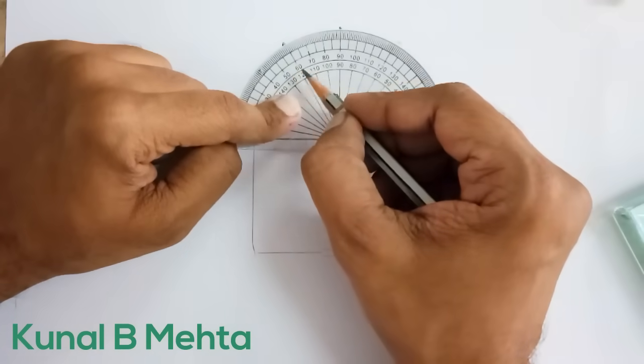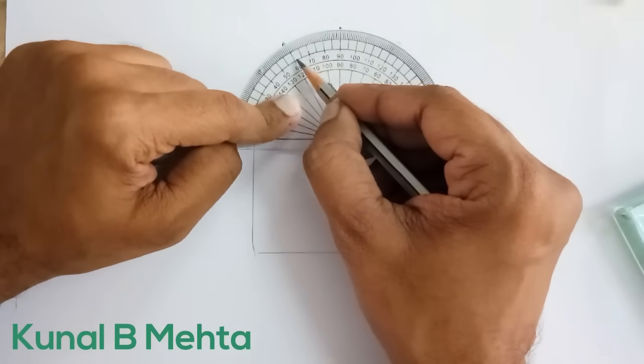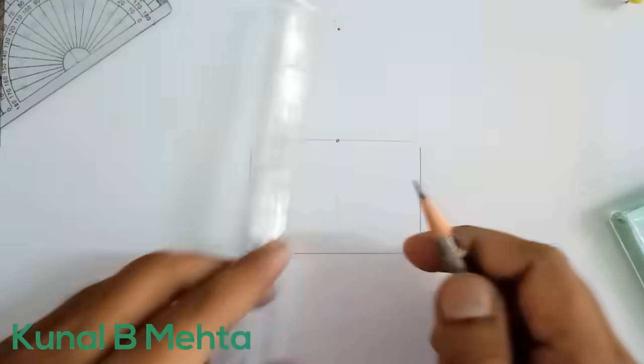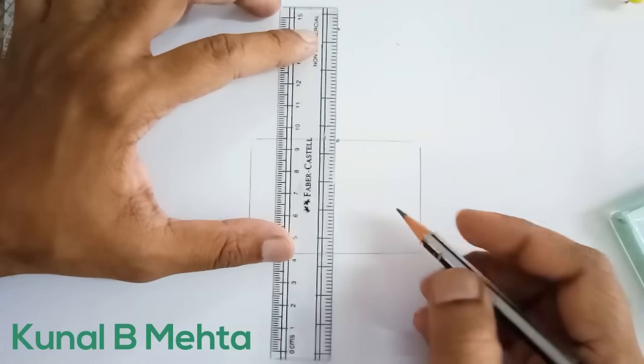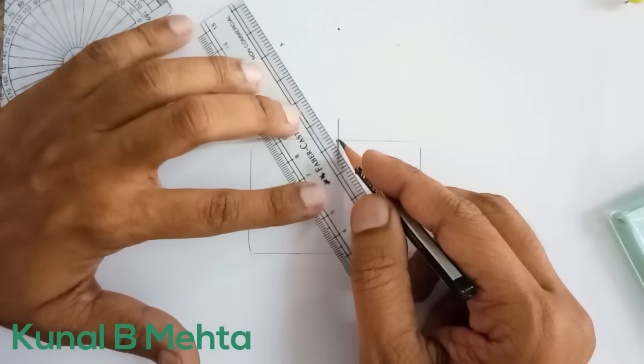Now with the scale, don't get confused, this is not 60 degree, we are measuring the angles from here 10, 20, 30. Now I am going to remove this and with the scale, this would be my normal and joining these two,